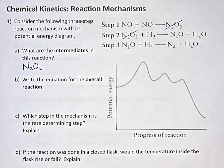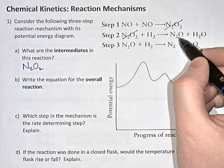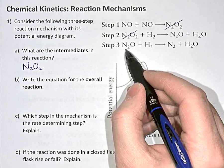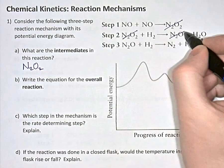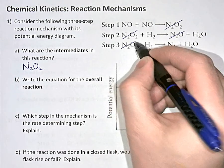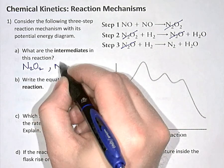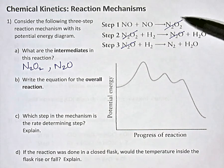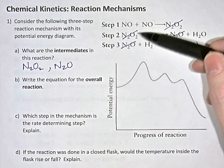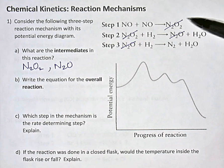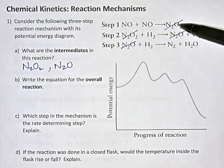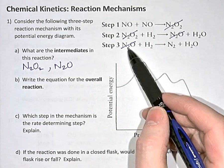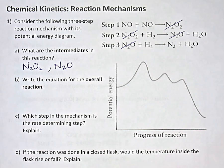Another intermediate: the N2O that's produced in step two is used up immediately in step three, so N2O is also an intermediate. In those two examples the product was used up in the very next step, but that doesn't always happen — sometimes a product in step one might be used up in step three and it would still be considered an intermediate.